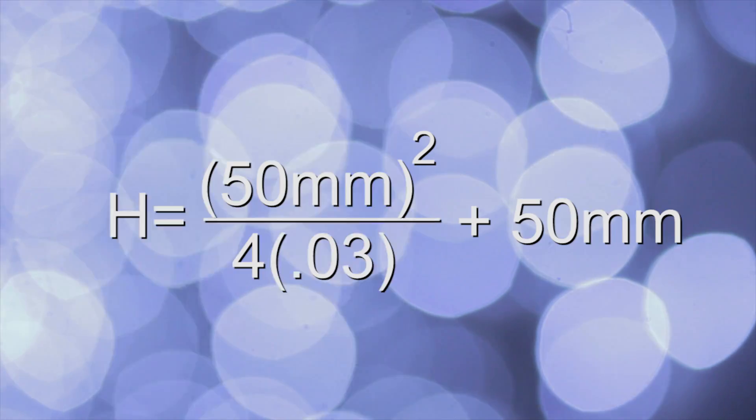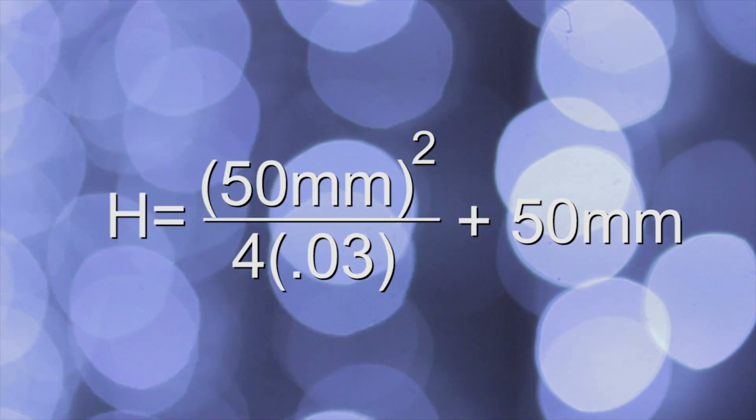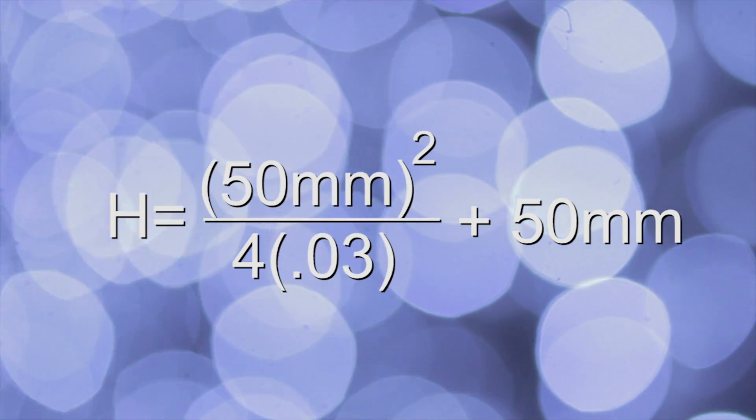We can keep our subject at 10 feet and our f-stop at 4. By plugging in 50mm into our master equation of the hyperfocal distance, we now will end up with a hyperfocal distance of 68 feet.